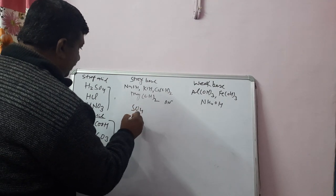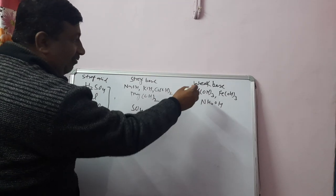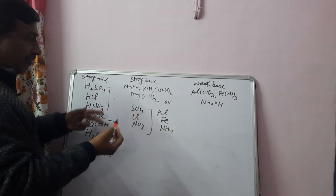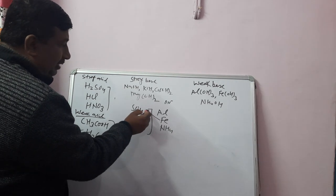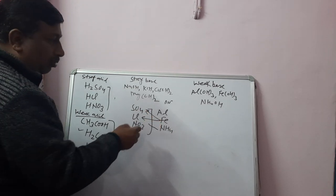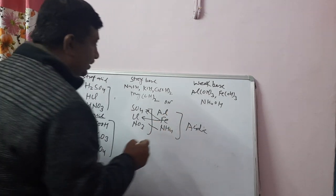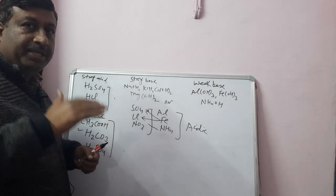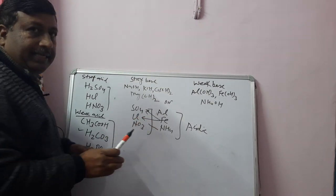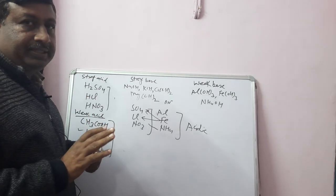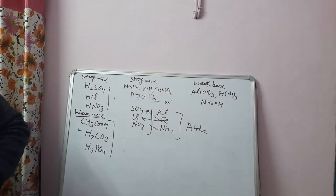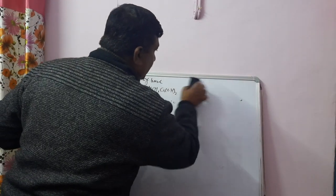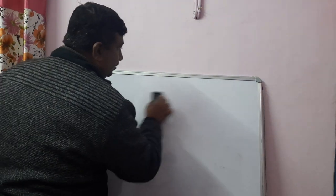Acidic salts are formed from strong acids (sulfate, chloride, nitrate) reacting with weak bases like ammonium hydroxide and ferric hydroxide. Examples are ammonium sulfate, ammonium chloride, ammonium nitrate, iron sulfate, and iron chloride. These are acidic salts, but their content in soil is generally low.